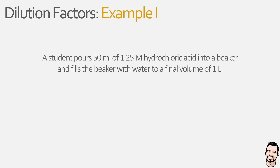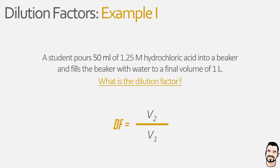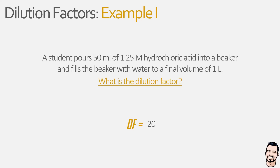So a student is in the lab and pours 50 ml of a 1.25 molar hydrochloric acid solution into a beaker and then tops this up to a final volume of 1 litre using water as a solvent. The student wants to know what is the dilution factor. If we bring up our equation we can see that the dilution factor is equal to V2 divided by V1, which we then substitute with our data so that it becomes 1 litre divided by 50 ml. Now this is a problem — we have different units of measurement which need to be converted so that they can cancel each other out. So we convert our litres to millilitres giving us 1000 millilitres divided by 50 millilitres, which when solved gives us the answer of 20, which is unitless.